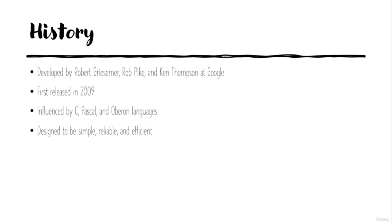The history of Golang. It was developed by Robert Griesemer, Rob Pike, and Ken Thompson at Google. We can say that Golang is developed by Google, and it was first released in 2009. Golang is influenced by C, Pascal, and other languages, and it is designed to be simple, reliable, and efficient.